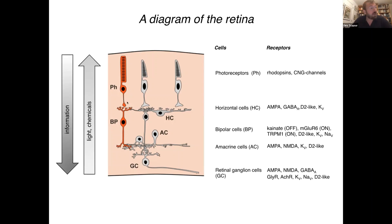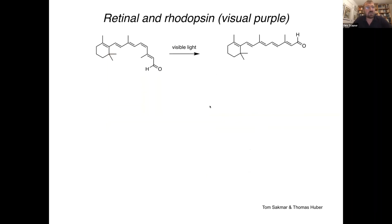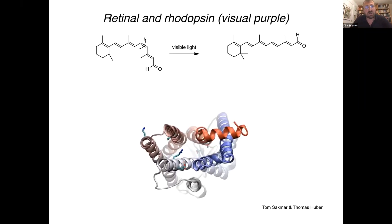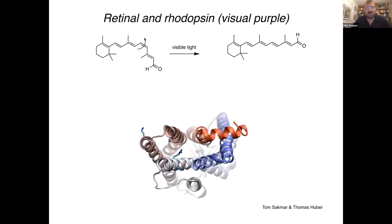A lot of the processing is happening already at the level of the retina. The retina really is a part of the brain put forth where much of the processing already happens. What happens on a molecular level is that a small organic molecule — a fatty, lipophilic molecule called retinal, which is bound to the protein — undergoes an isomerization. There is a form called the 11-cis form, and upon absorption of a photon, this double bond rotates literally from cis to trans. This rotation is felt by the protein envelope that embraces this molecule.